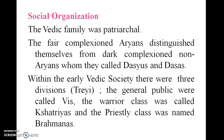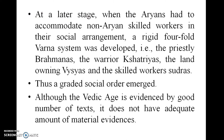Regarding social organization, the fair-complexioned Aryans distinguished themselves from the dark-complexioned non-Aryans, whom they called Dasyus or Dasas. Within early Vedic society there were three divisions: the general public were called Vaishyas, the warrior class was called Kshatriyas, and the priestly class was named Brahmanas. At a later stage, when Aryans had to accommodate non-Aryan skilled workers, a rigid four-fold Varna system developed — Brahmanas, Kshatriyas, Vaishyas, and Shudras.